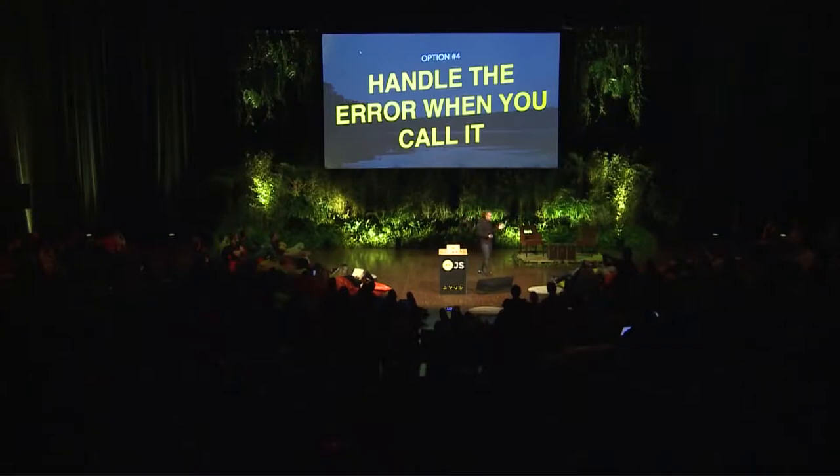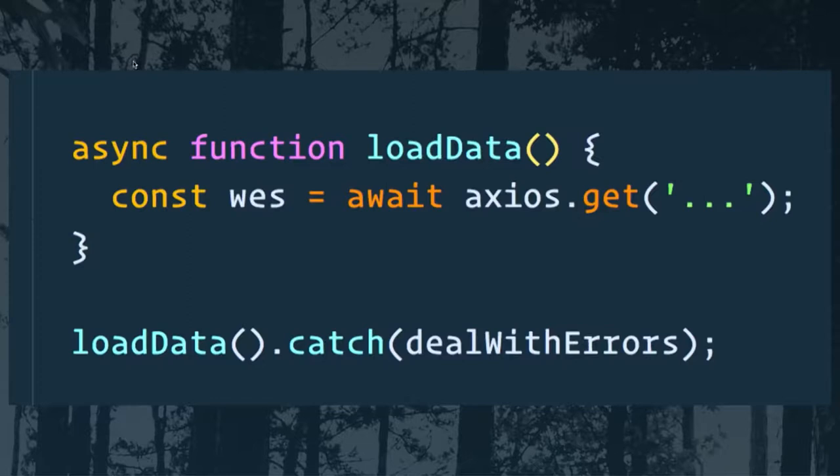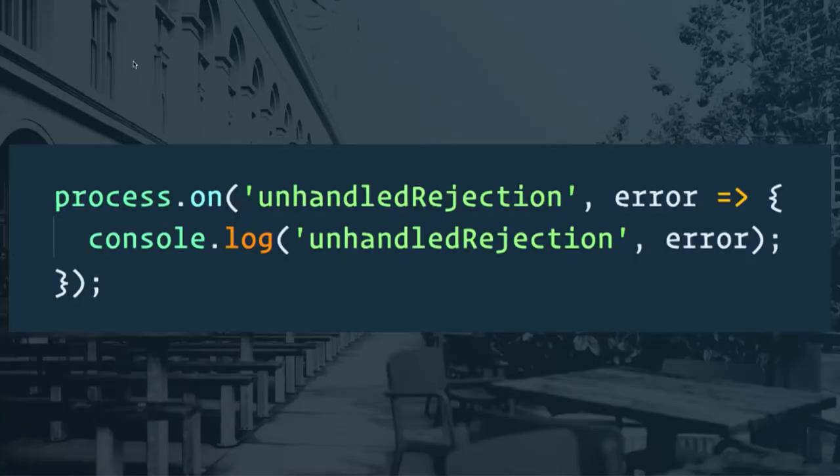The fourth option is to handle the error when you call it — sometimes you want to handle a special case differently. Simply make your async function loadData, and when you call it, chain a dot-catch on the end. The fifth option is important for Node: Node will soon exit the process if a promise is rejected. If any code doesn't handle an error on a promise, the entire process exits and your app could go down. Simply listen for the unhandledRejection event and when that happens, send it off to an error handling service so you can log and deal with it.